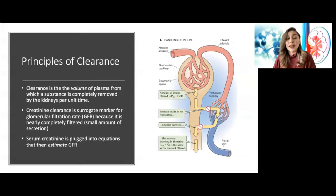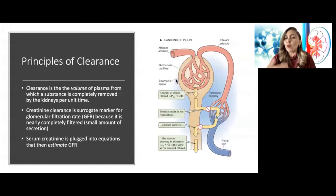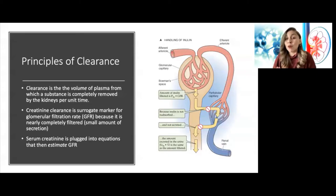On the other hand, something like creatinine is completely filtered. There's no mechanism to reabsorb creatinine — all the creatinine that comes to the glomerulus is filtered, and just a small amount is actually secreted. Ultimately, what is excreted ends up being essentially the same amount as what is filtered. This is why creatinine clearance is a good marker for the glomerular filtration rate.